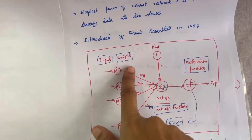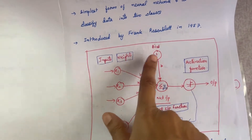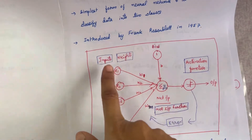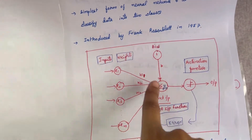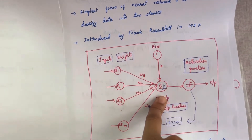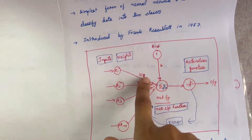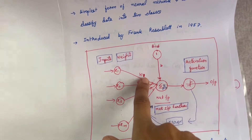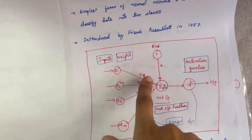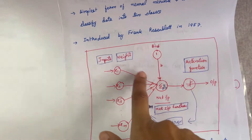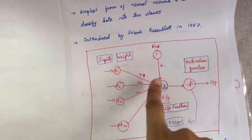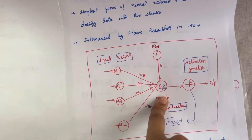Next is weights and bias. Weights and bias are the values between the inputs and your output function. These values will take a value between 0 and 1, and they sit between your inputs and your output function.